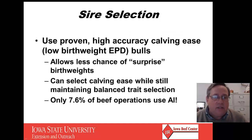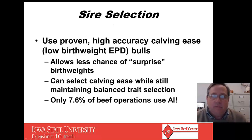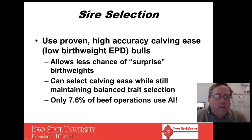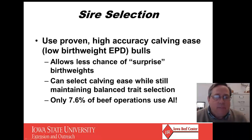Sire selection is an important part of heifer development because you've got to select the right kind of bull to mate them to. If we do that, there are certainly less chances of a surprise if we can use high accuracy calving ease bulls — low birth weight EPDs or high calving ease direct. You can select calving ease while still maintaining balanced trait selection because we have a lot of deep EPDs and a lot of bulls in our breeds.